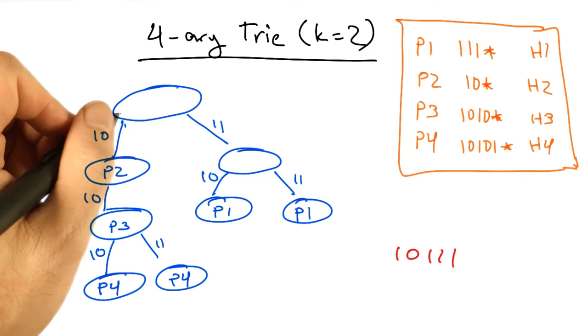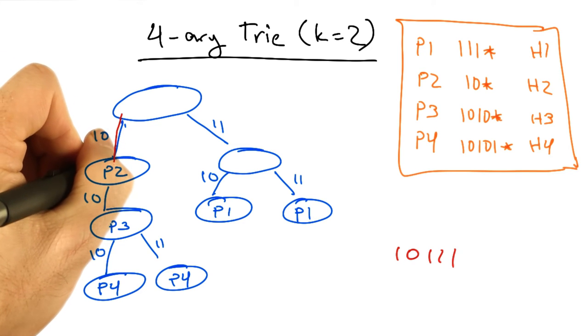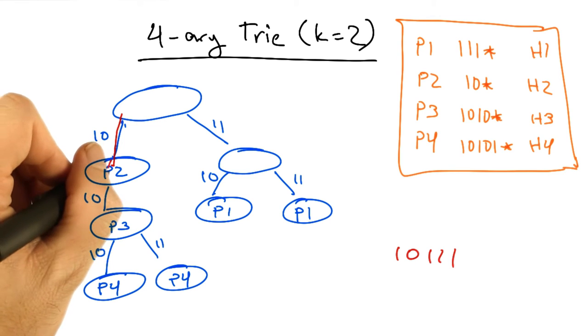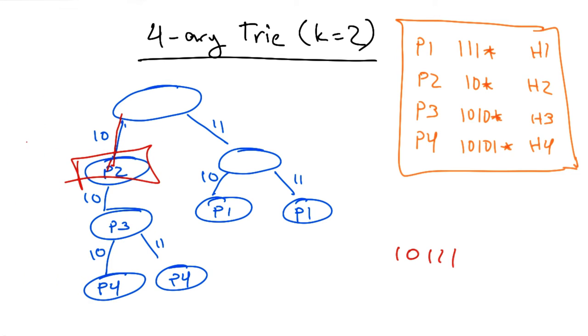Now suppose we want to look up 1, 0, 1, 1, 1. Again, we can spell this out, 1, 0, 1. And we can see that we get no further than p2, and again, we match at p2.